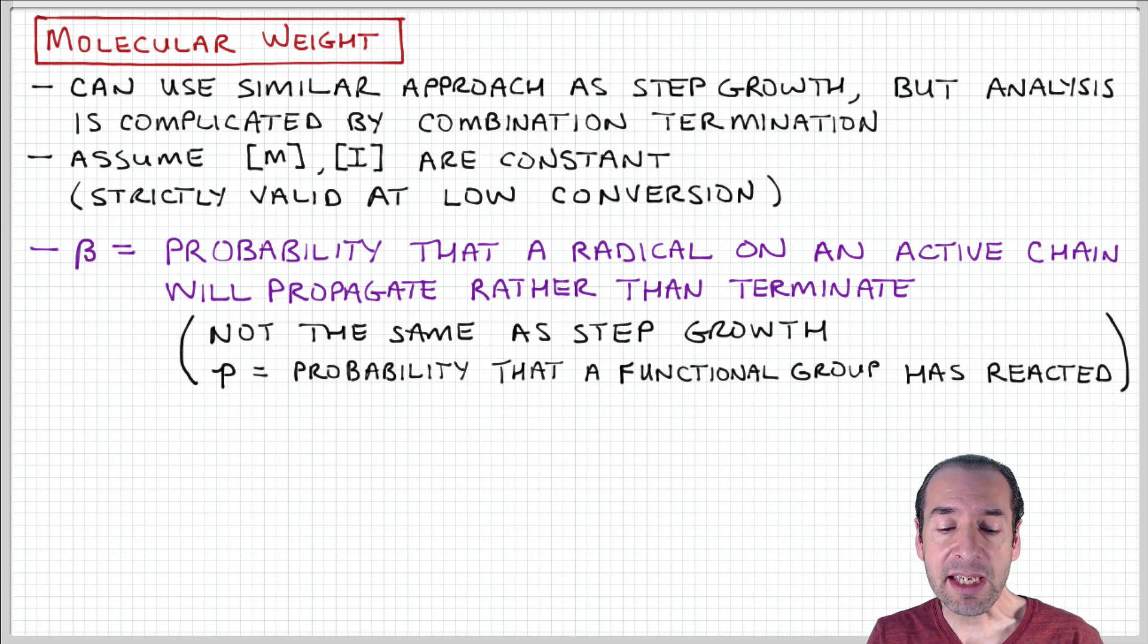Because remember that P is an expression of the probability that functional groups have reacted. The polymerization process in step growth involves functional groups directly associated with the monomers. Because they have more than one functional group, they can combine end-to-end in various ways. So it looks kind of similar, and in some sense it is, but it's not the same thing as the extent of reaction. Be careful that you don't get those two parameters confused.